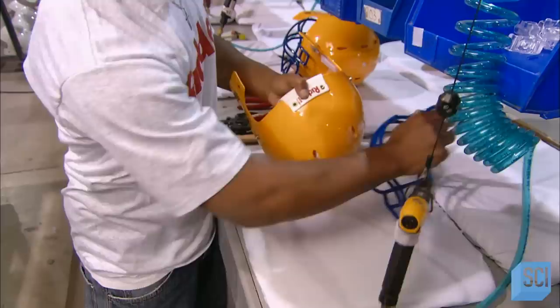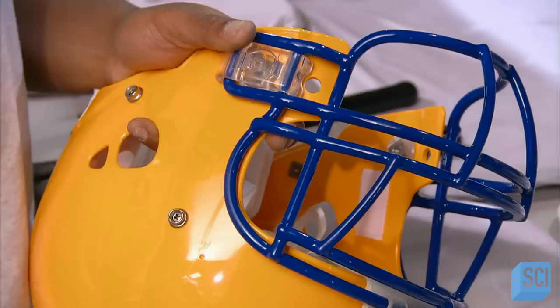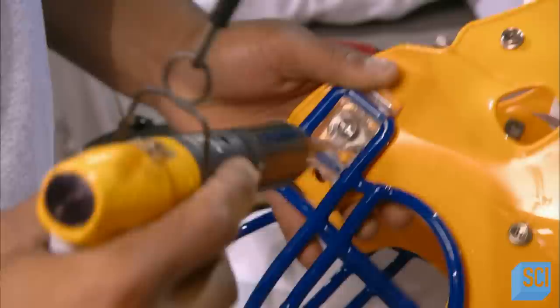Once the production run gets the okay, the face guard is attached. It's made of plastic-coated steel and has been custom-produced at a different factory. There are dozens of face guard styles for the player to choose from. This helmet is now looking pretty fierce, but it's not ready for action yet. It needs a chin strap and cup.